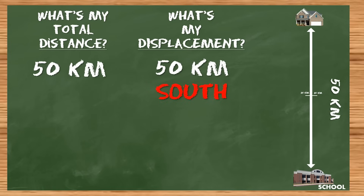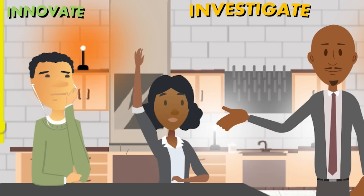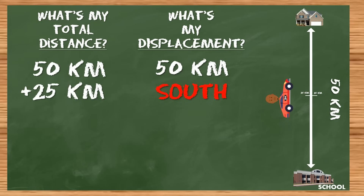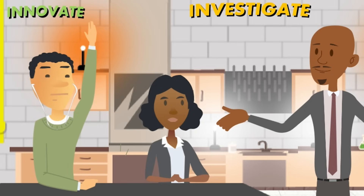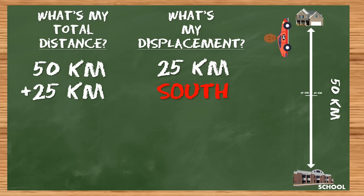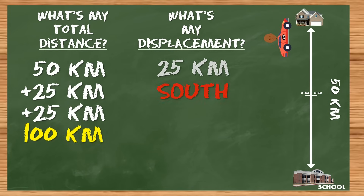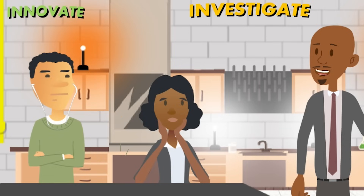When it's time for me to go back home, let's say I get halfway home. What's the total distance I've traveled so far? 50 plus 25 — 75 kilometers. However, what's my displacement, or how far am I from my house where I started? 25 kilometers south. So when I reach my house, what's the total distance I've traveled since I left home in the morning? 100 kilometers. What's my displacement though? Zero — because I'm back where I started.